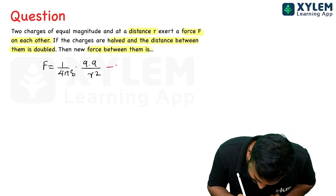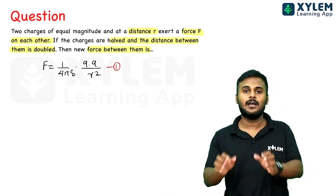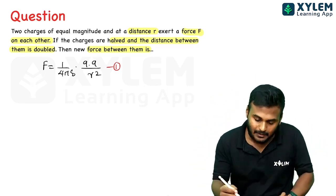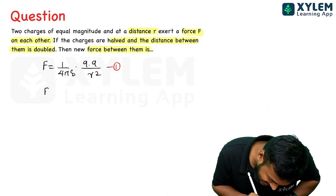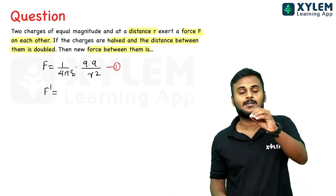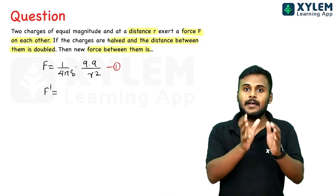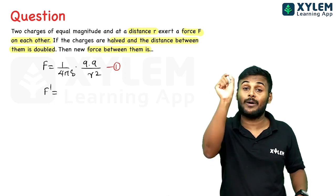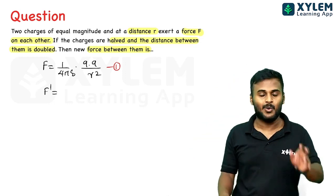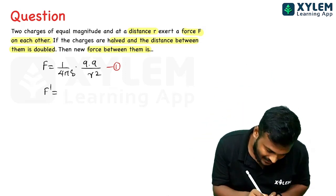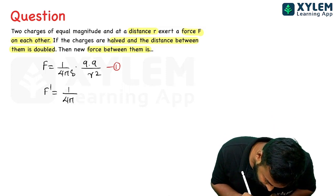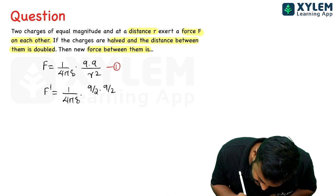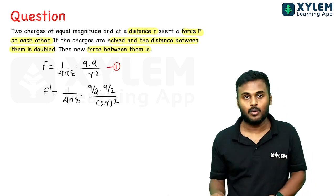Now for the second case, we find F dash. The second case: charges are halved and distance is doubled. The equation is 1 by 4π ε₀ multiplied by (Q/2) into (Q/2) divided by (2r) whole square.